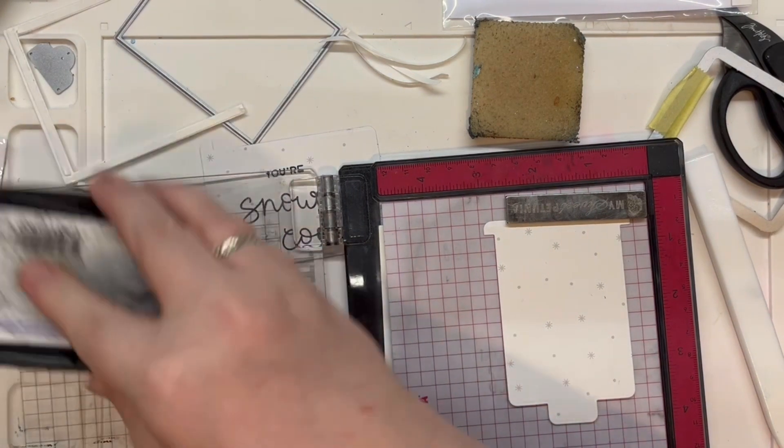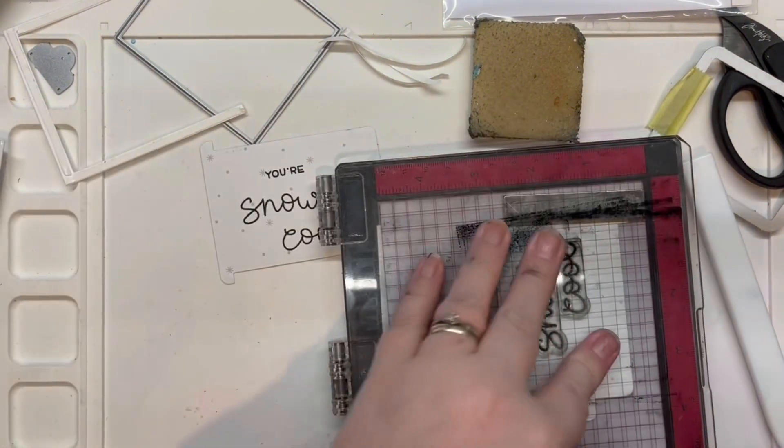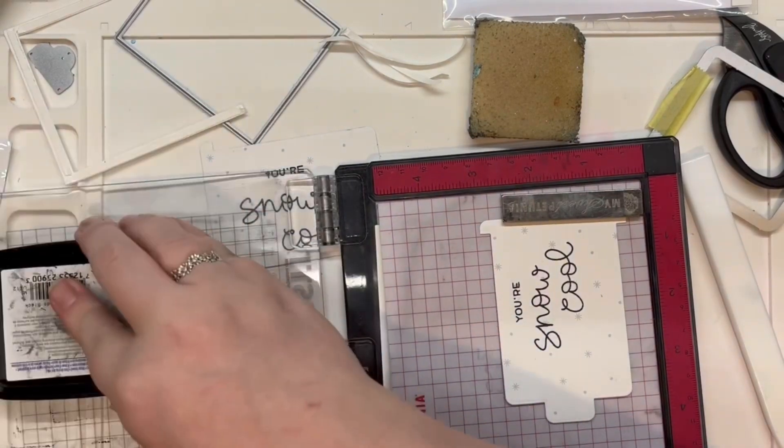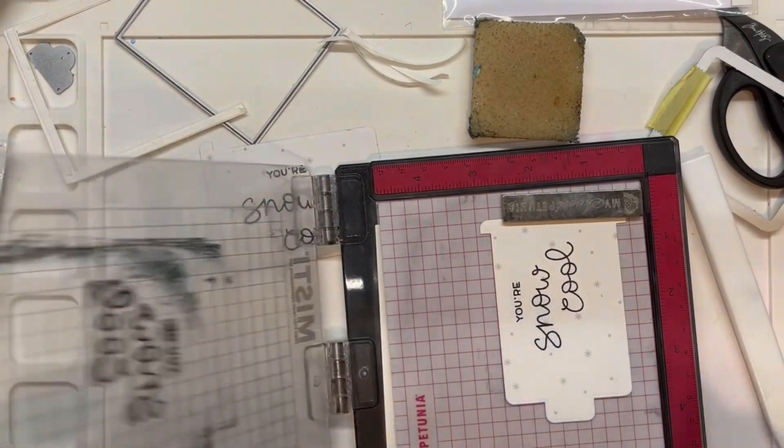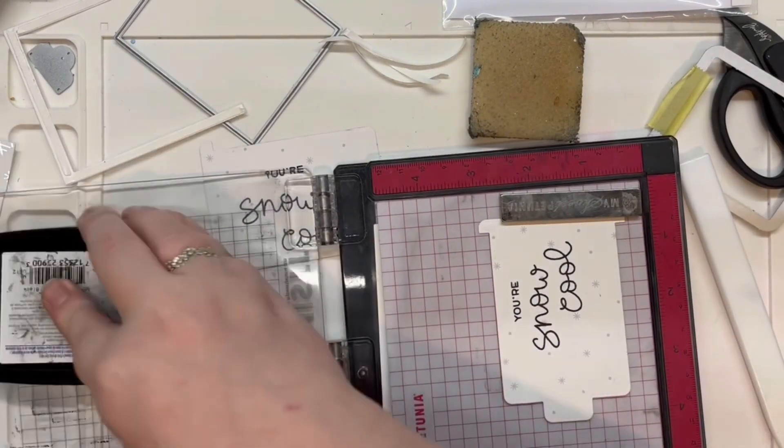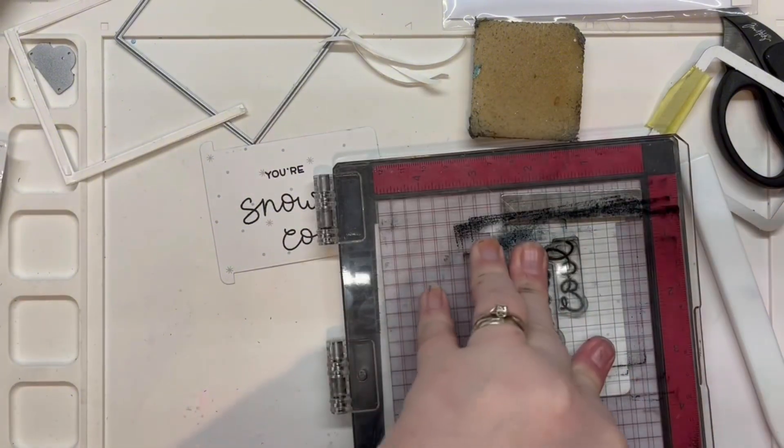The slider piece has to have the tab facing the left and not the right. There is a special slot for it to be fed through on the left and not the right. So make sure you stamp your sentiment so it goes the left way and not the right. Thank goodness for the ability to edit videos.